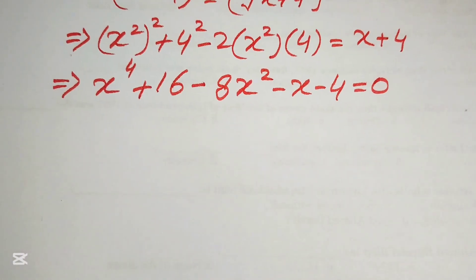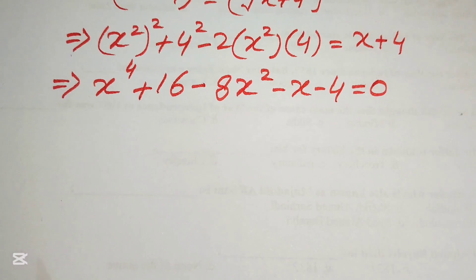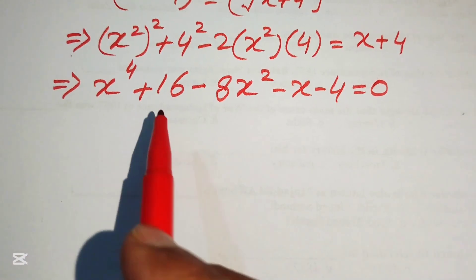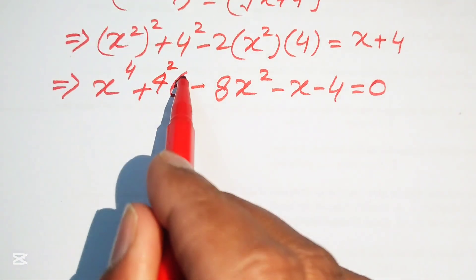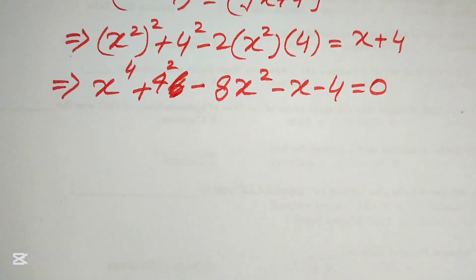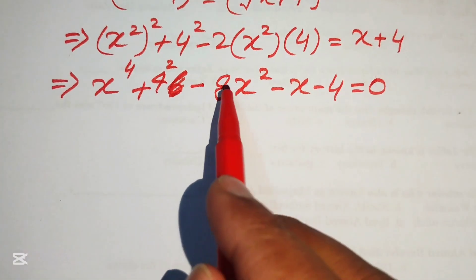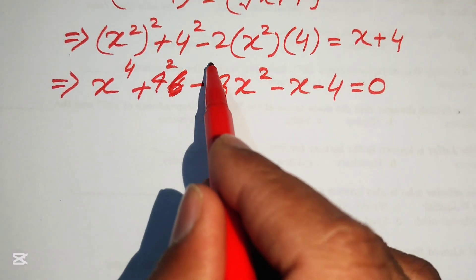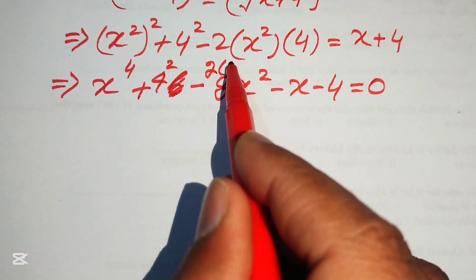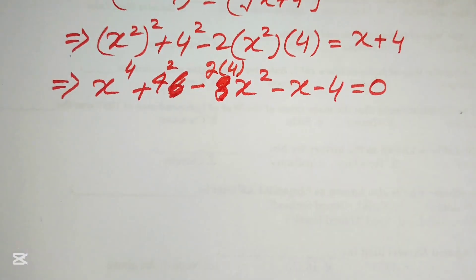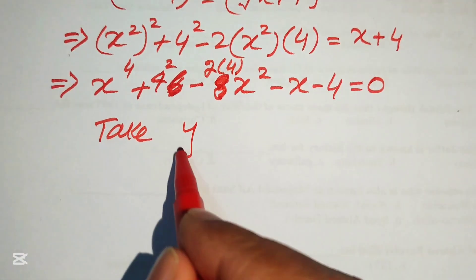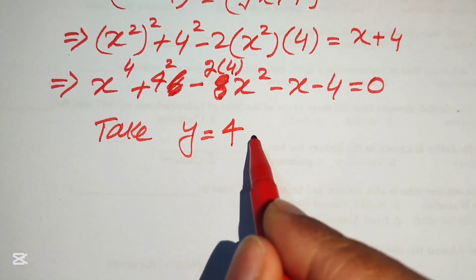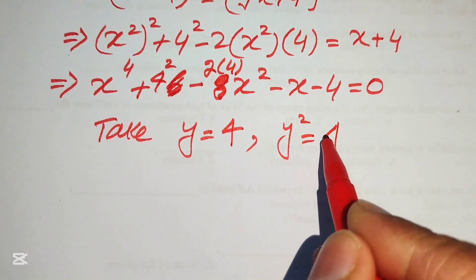Now we need some simplifications. We write 4 squared as it is and do not convert it to 16. We also write 8 in the form 2 times 4 times x squared, because we need a substitution. We take 4 equals to y, so y squared equals 4 squared.